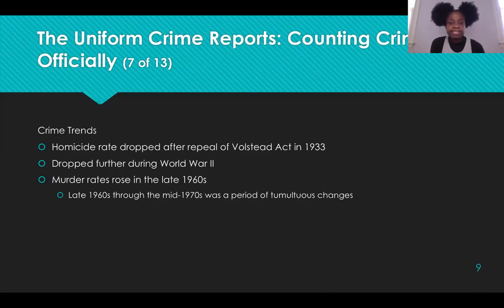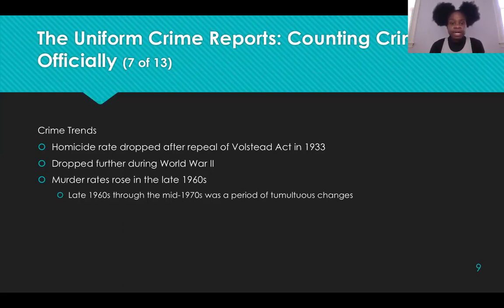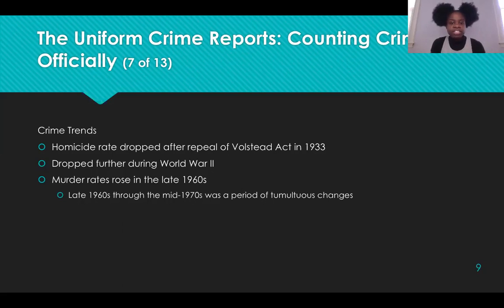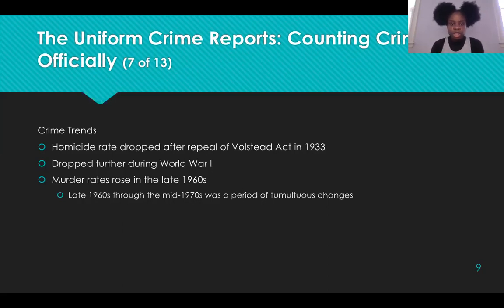The homicide rate started a steep climb after the Volstead Act, which prohibited the production and sale of alcohol in the 1920s, as gangs fought over the lucrative, now-illegal alcohol market. The rate started to fall with the repeal of the Volstead Act in 1933, which effectively removed criminals from the alcohol business. When most young men — the age category that commits the lion's share of crime — were in uniform and overseas, crime showed a sharp rise when they returned, then a slight decrease during the 1950s and 1960s.